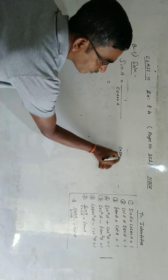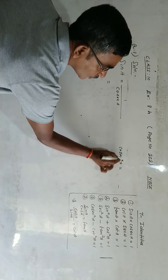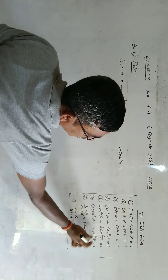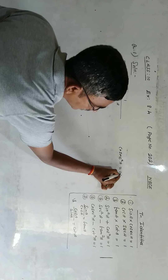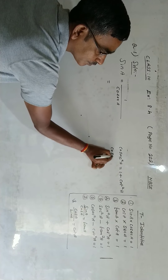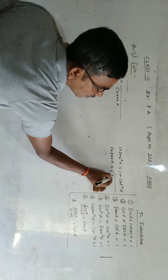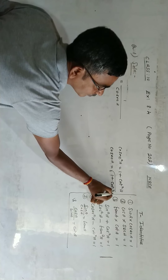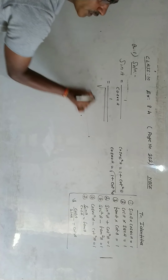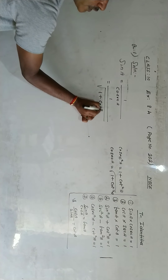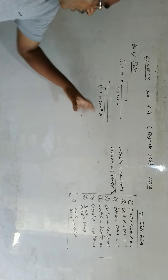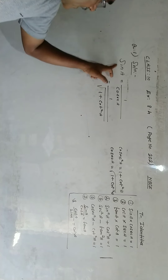Cosec squared a equals 1 plus cot squared a. If we transfer the minus to the other side, minus cot squared a becomes plus cot squared a. So cosec squared a equals 1 plus cot squared a, and cosec a equals square root of 1 plus cot squared a. In place of cosec a, we put root of 1 plus cot squared a — now sine a is fully converted in terms of cot a. The first part is complete.